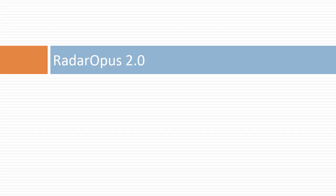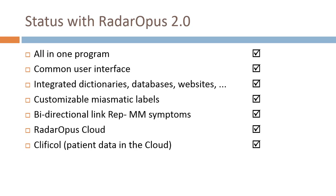Now, those were the dreams. Let us see today, Spring 2017, when we are releasing RADAR OPUS 2.0 — as the number says, a major release — where we are in the dream. This project has already succeeded in creating an all-in-one program offering access through one single common user interface to Repertory, Materia Medica, and patient file. You can find, retrieve, save, and analyze information in the same way and logic. Dictionaries, databases, and websites have been integrated and can be searched and managed from within the program.